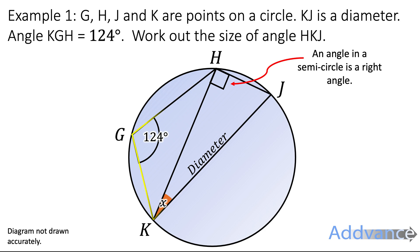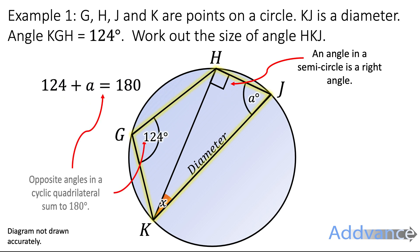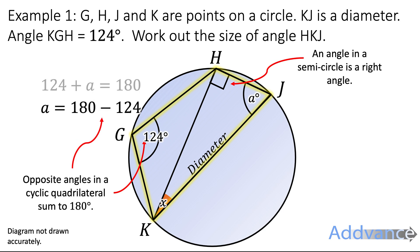We also know that this shape here is a cyclic quadrilateral. So these two angles here, opposite angles in a cyclic quadrilateral, will add up to be 180 degrees. So we rearrange that equation and we get that a is 56 degrees.